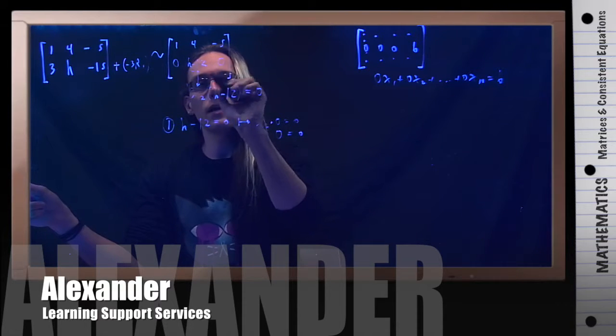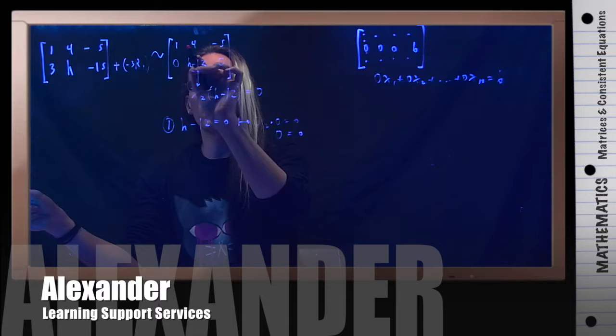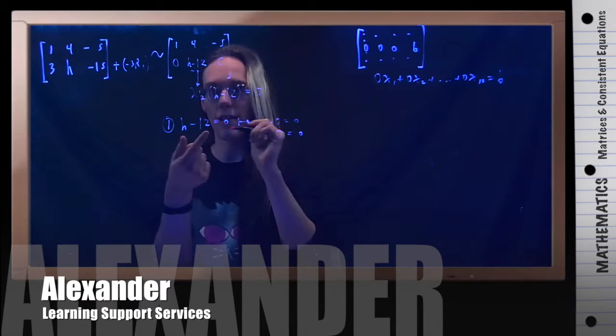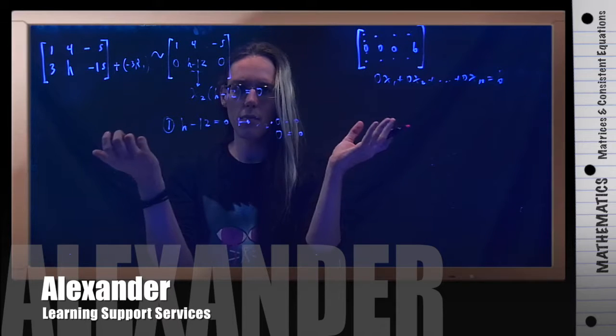I would have a row of zeros here. And then I can just solve this. x1 would equal negative 4x2 minus 5. And I could plug in whatever values I wanted if h minus 12 is 0. So that's not a problem at all.